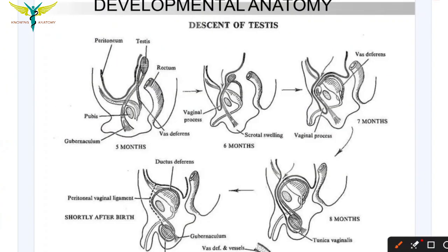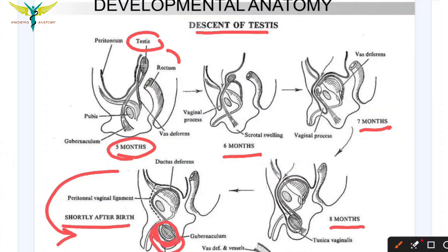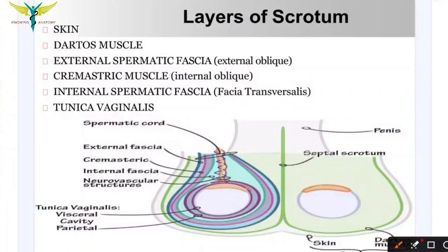This is the developmental anatomy of the testicular descent. During five months, the testis remains above the rectum, and at six, seven, and eight months the testis descends, shortly after birth, into the scrotum, where the tunica vaginalis will be located. The descent of testis will be covered in another video.